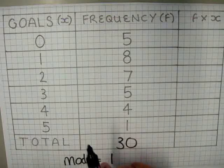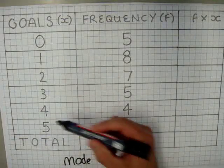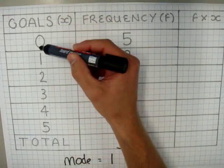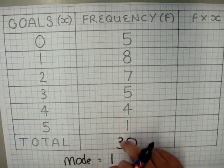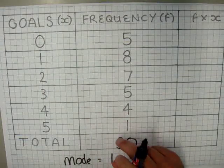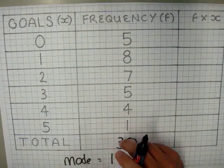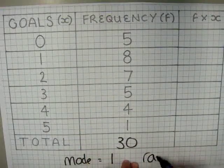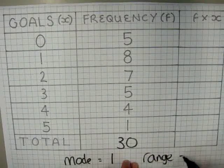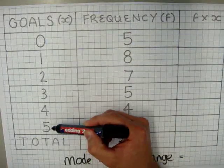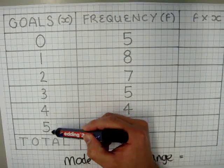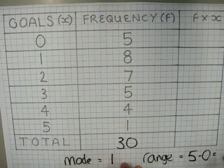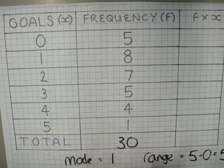We want to be careful that the median, the mode, and the mean are found within our data. So your mean, mode, and median should all be between 0 and 5. If you have a number outside of those numbers, you know you have gone wrong. We now want to find the range — this is the spread of the data. The highest piece of data is 5, take away the lowest piece of data, 0: 5 take away 0 is 5, giving us a range of 5 goals.